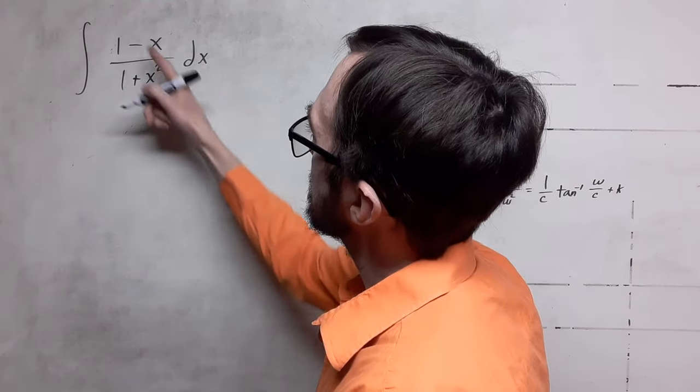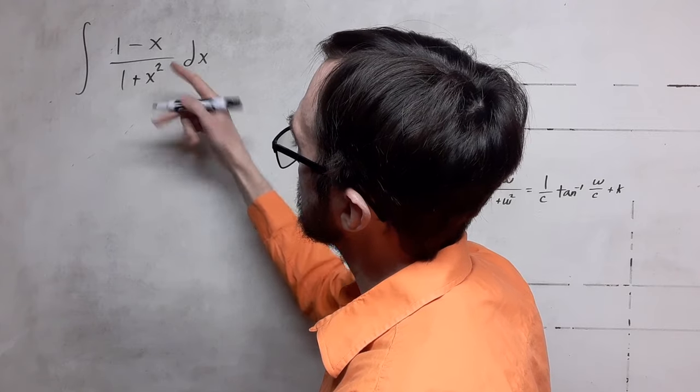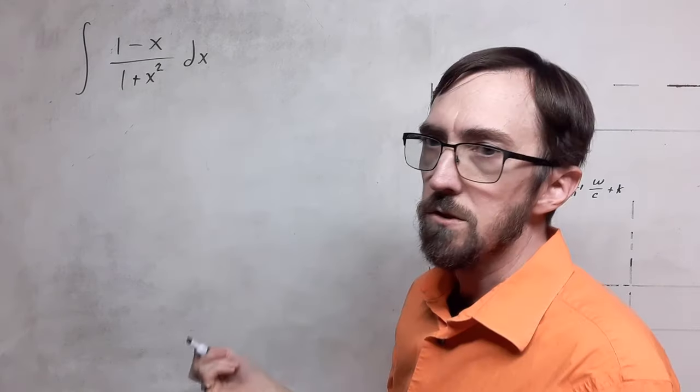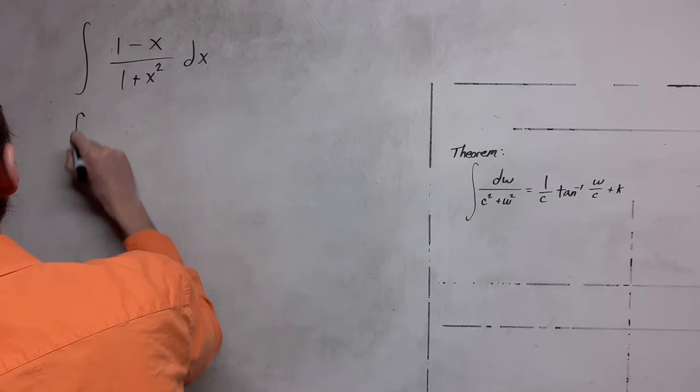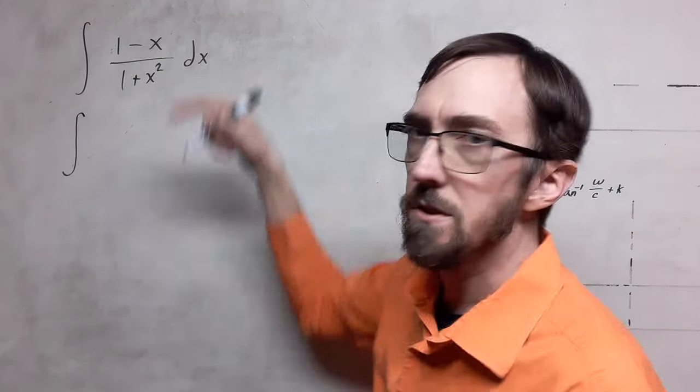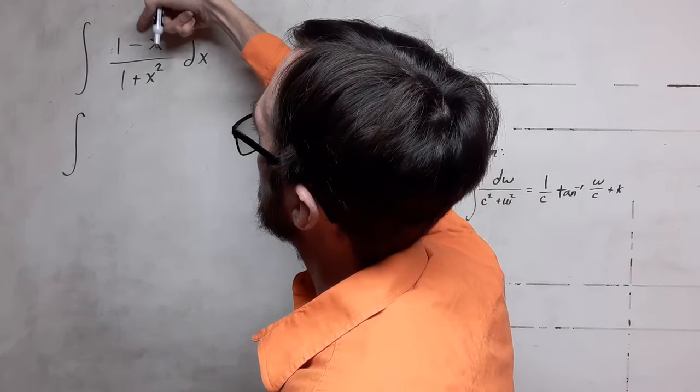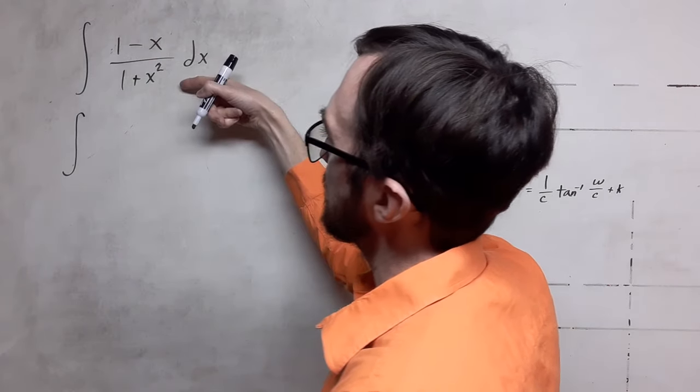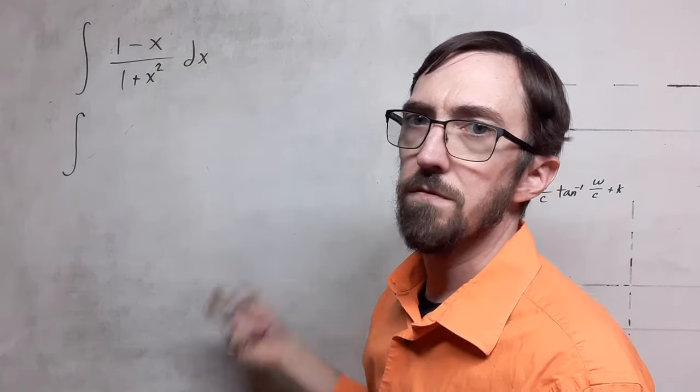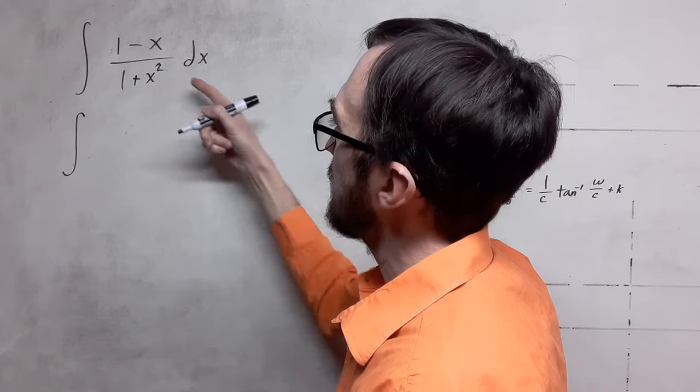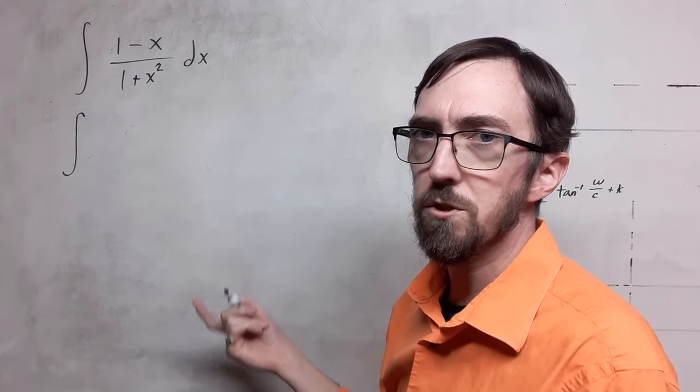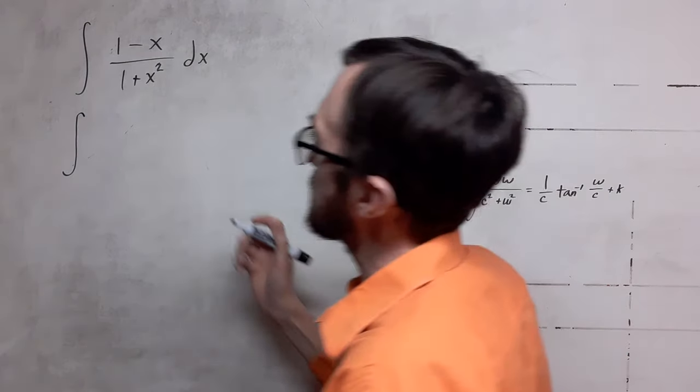We're going to split this fraction into two separate fractions using fraction properties to begin with here. You can split a numerator at the plus or minus, but you can't split a denominator because you have to have common denominators when you do addition and subtraction of fractions. So this is just fraction properties.